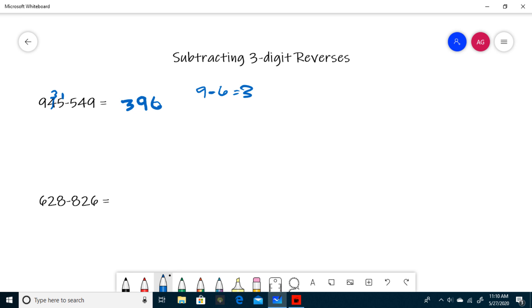So for the next question, it's basically the same but it's a little bit of a twist, because 628 is less than 826, so this is going to be a negative answer. So how do we deal with this?